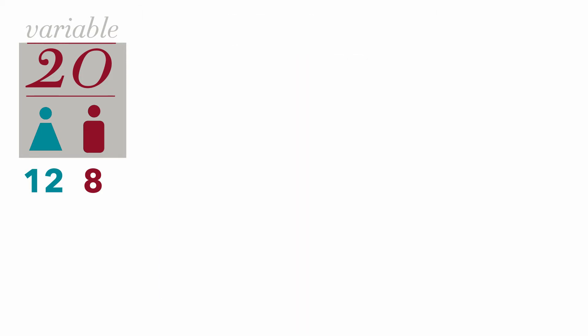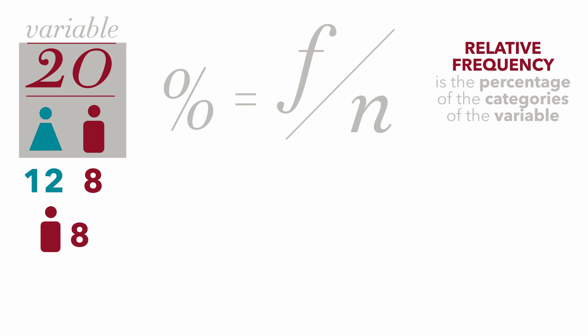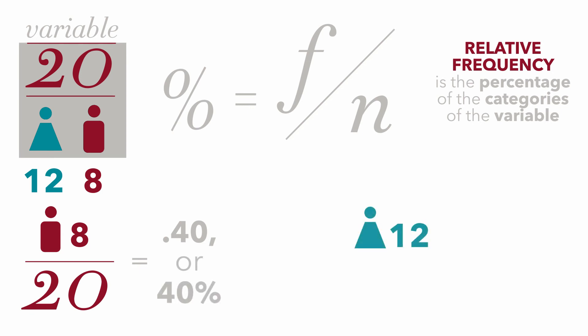Now let's calculate the relative frequencies, also referred to as a percentage. The relative frequency or percentage is relative to the total. The way we calculate a percentage is we take the frequency for each category over the total. We have eight males over a total of twenty — eight over twenty equals 0.4, or forty percent. For females, we have twelve over a total of twenty, which equals 0.6, or sixty percent. It's that simple.